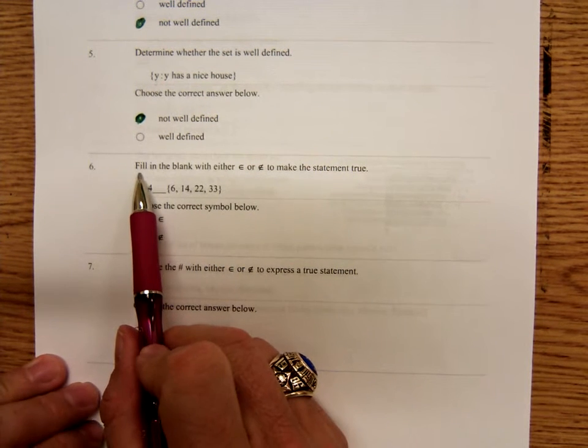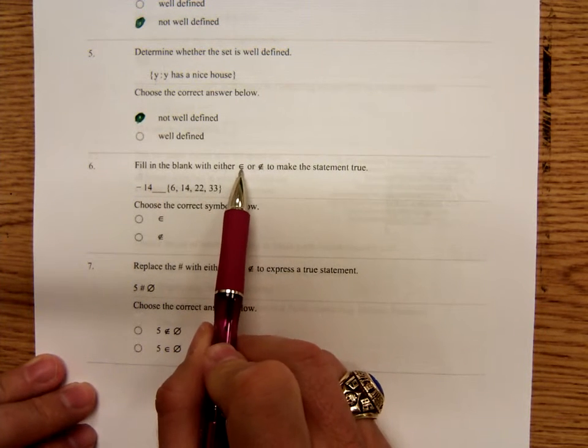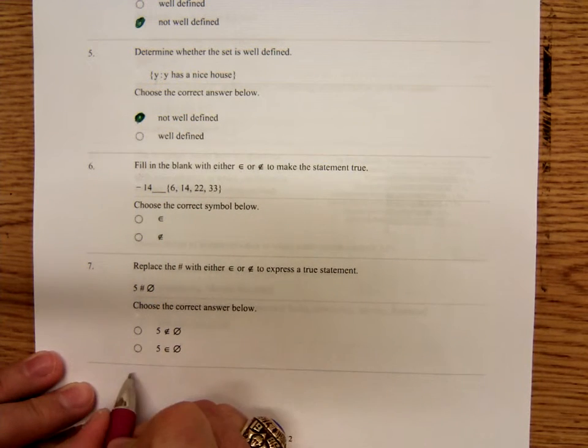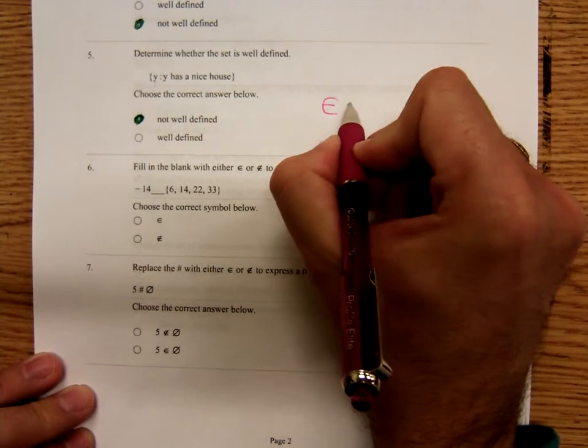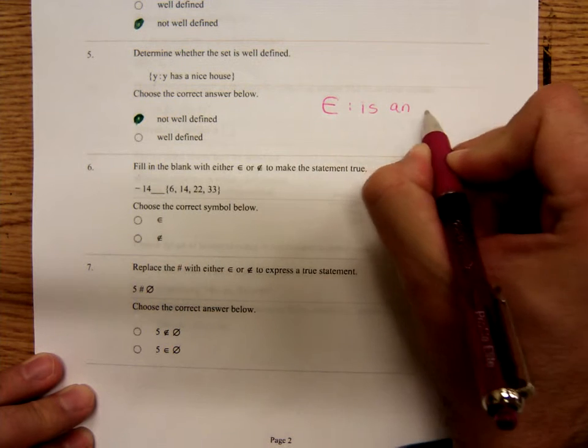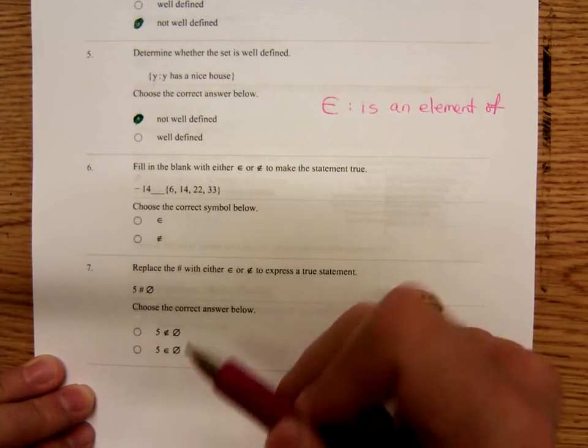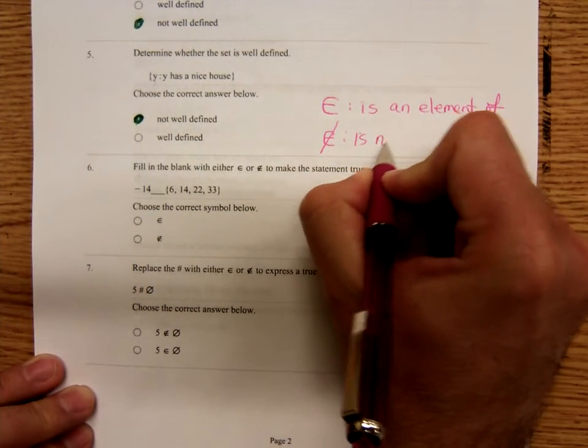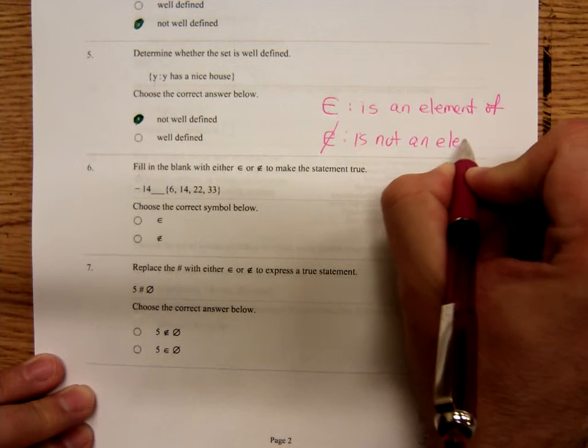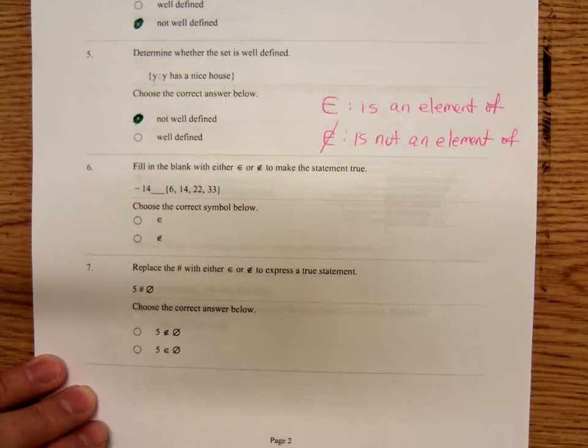Now, some notation when working with sets. These little symbols, it looks like an E sort of, and then an E with a slash. This symbol means is an element of. So that means it is in the set. And the element symbol with a slash means is not an element of.